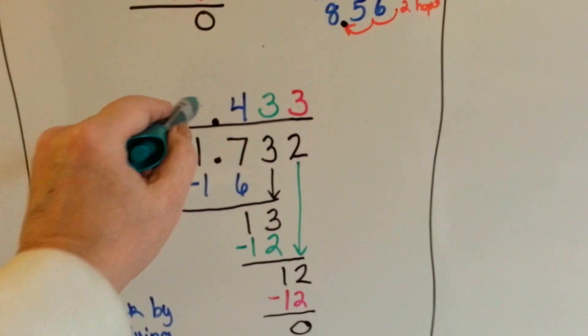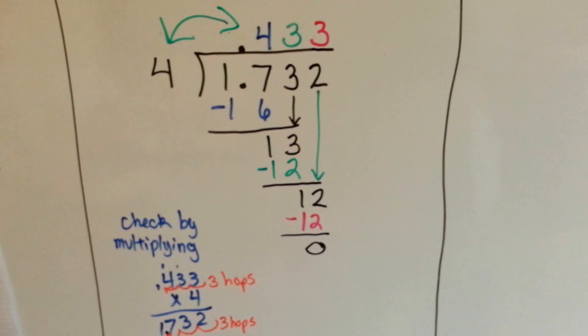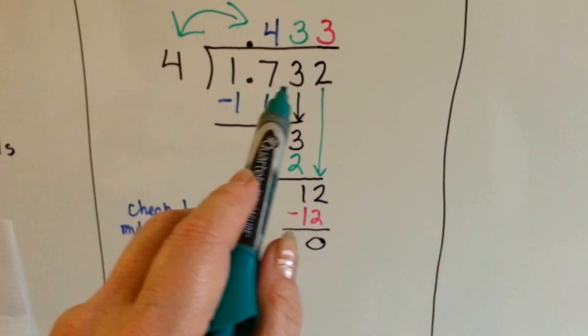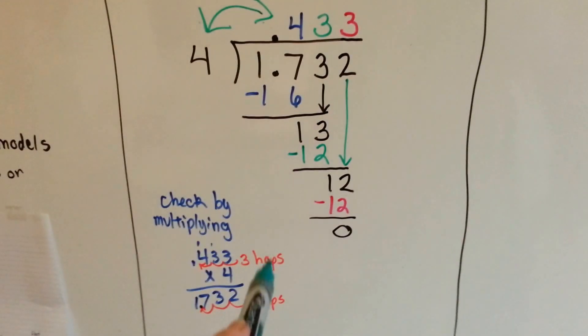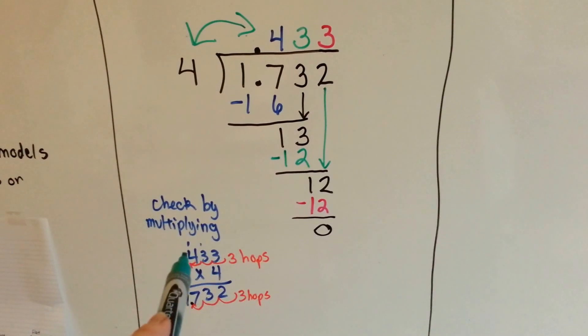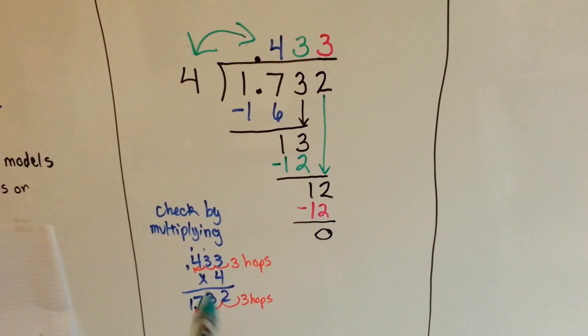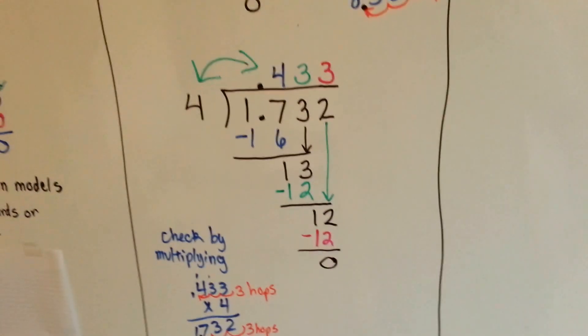And then, again, we multiply the quotient by the divisor. And if it comes out as 1.732, it does, then we know we did it correctly. And see, we counted the hops coming over. There were 3 hops. So at 3 hops in the equation, there's 3 hops in the product. And we know we did it right.